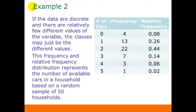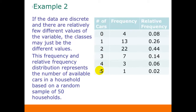Sometimes we have discrete data with relatively few different values. In that case, we may just make the classes the different values of the data. This frequency distribution represents the number of available cars in a household based on a random sample of 50 households. The data just went from 0 up to 5, so it's easier to make those values our classes — going through and counting how many zeros there were, how many ones there were, and so on.